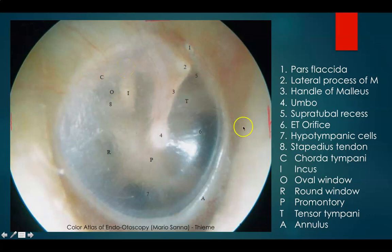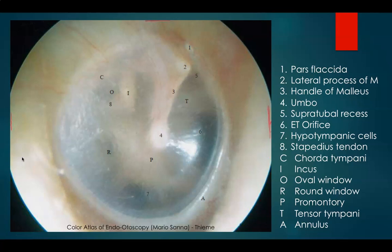This is your right ear. This is anterior where you have cone of light in the anteroinferior quadrant, anterior and posterior. This is the right ear viewed from the outside.